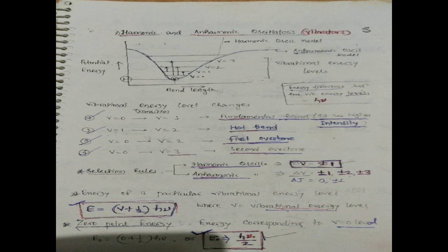Now we discuss the selection rules for harmonic and anharmonic oscillators. For the harmonic oscillator, delta-v equals plus or minus 1. For the anharmonic oscillator, delta-v equals plus or minus 1, plus or minus 2, plus or minus 3, and delta-J equals 0 or plus or minus 1. The energy of a particular vibrational level equals (v + 1/2)hν. For the harmonic oscillator, the zero point energy corresponding to v=0 equals (1/2)hν₀.